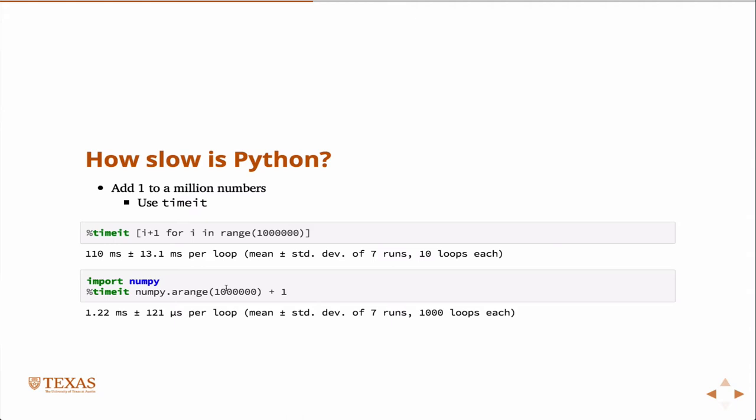And what this function does is it also creates the array of a million numbers. So one, two, three, four, five, six, seven, all the way to a million. And then it adds one to it. And you can see here that there's basically an order of magnitude difference. So the NumPy implementation is about an order of magnitude faster than the pure Python implementation.